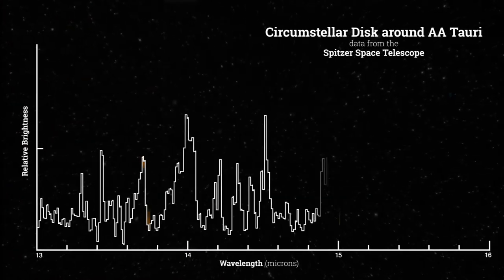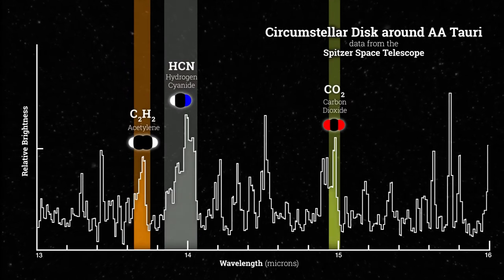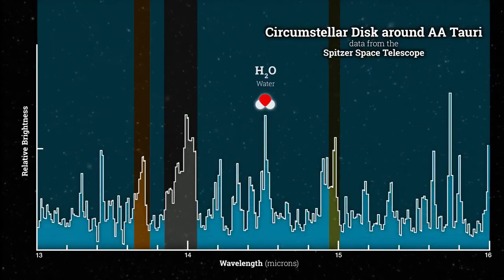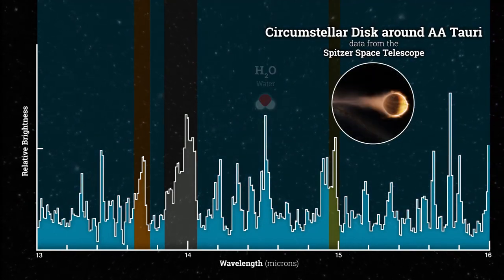In fact, each atom and molecule has a unique spectroscopic signature. Webb can even use spectroscopy to look for water vapor, observing its presence both in planetary disks and in the atmosphere of existing planets.